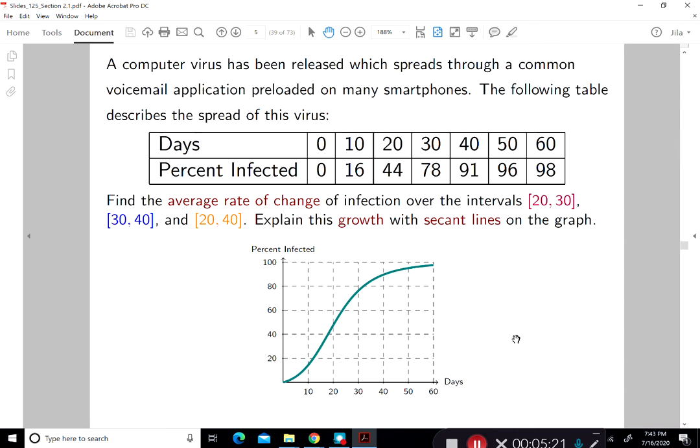The second row is percent infected. 0, 16, 44, 78, 91, 96, 98. So the percentage is increasing, basically. Find the average rate of change of infection over the interval 20 and 30, then 30 and 40, and 20 and 40. Explain the growth with secant lines on the graph.